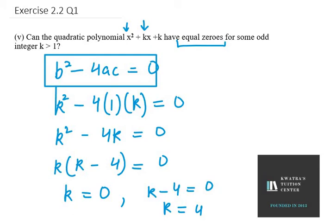It says for some odd integer k greater than 1. We have two values: k = 0 and k = 4. Since the condition says k greater than 1, the quadratic polynomial has equal zeros at k = 4, so we need to ignore k = 0.